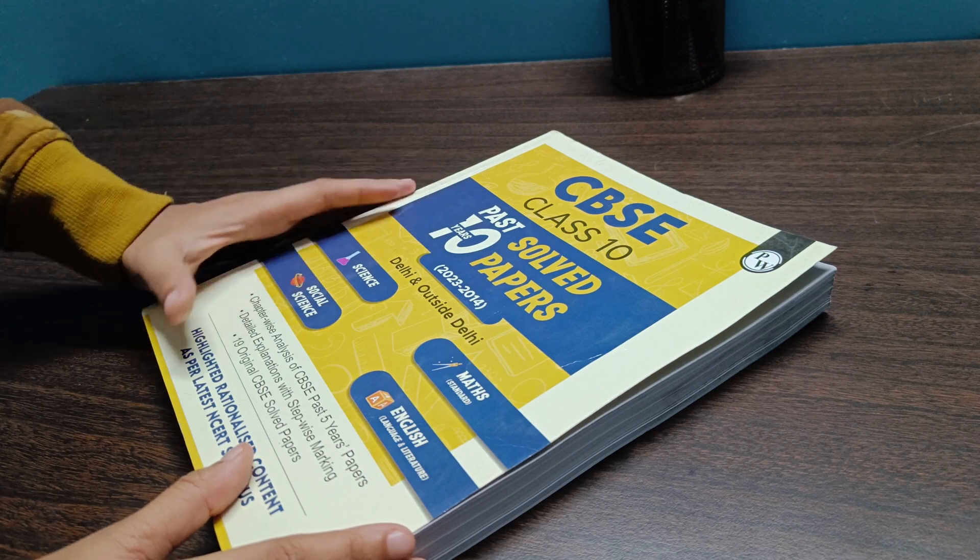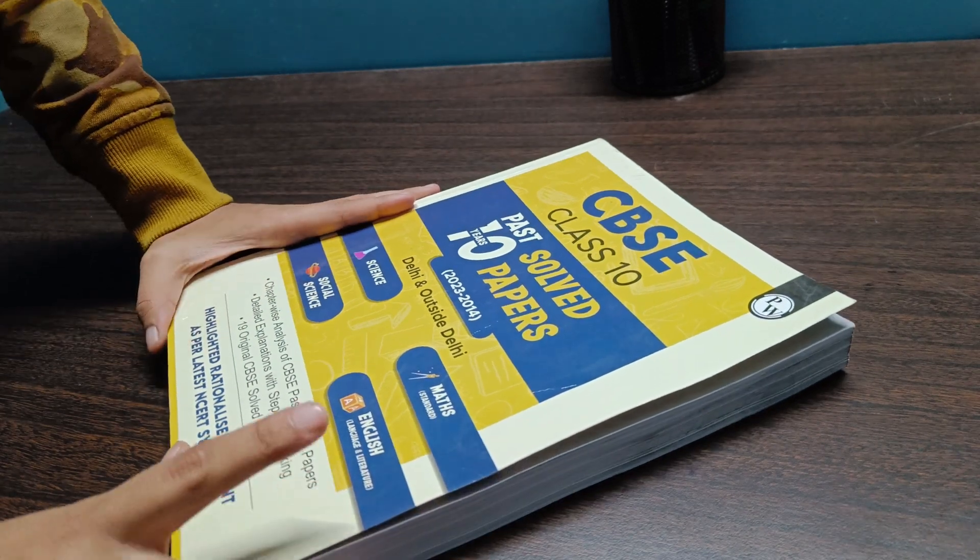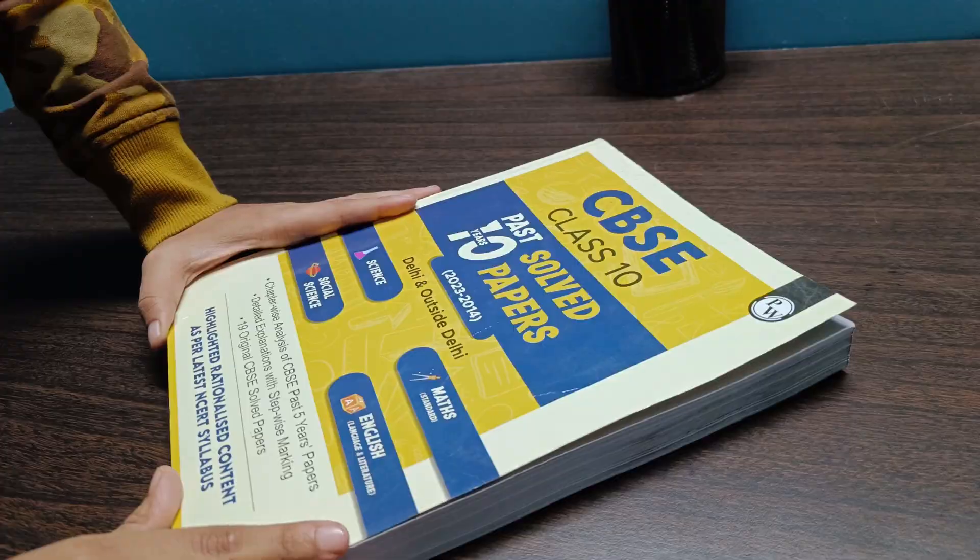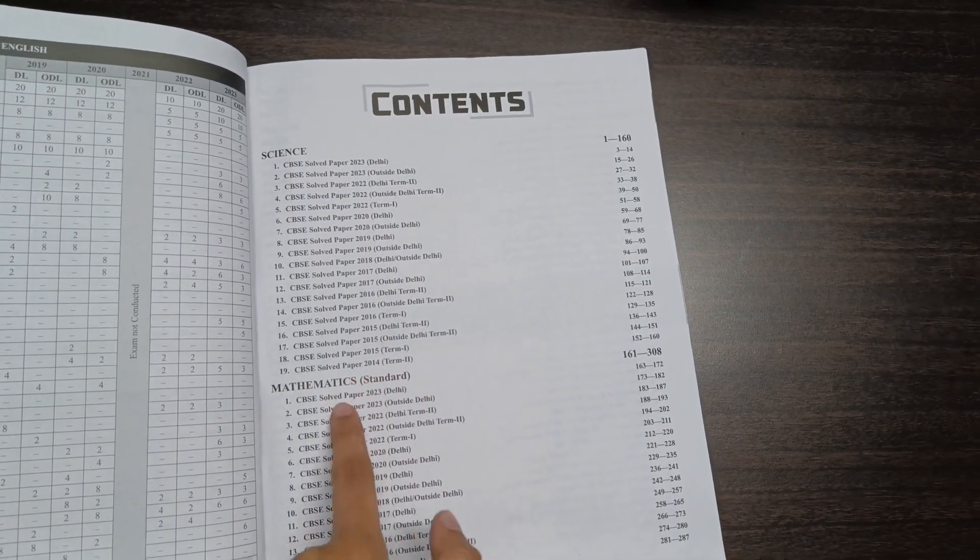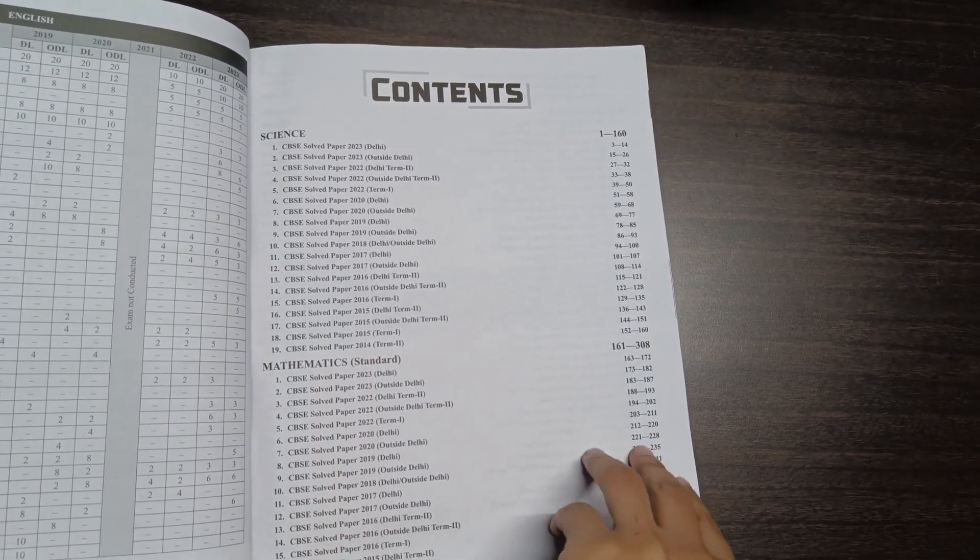It contains the question papers from the year 2014 to 2023 of both Delhi and outside Delhi in the subjects math, English, science and social science. Now let's see what the contents of this book are.